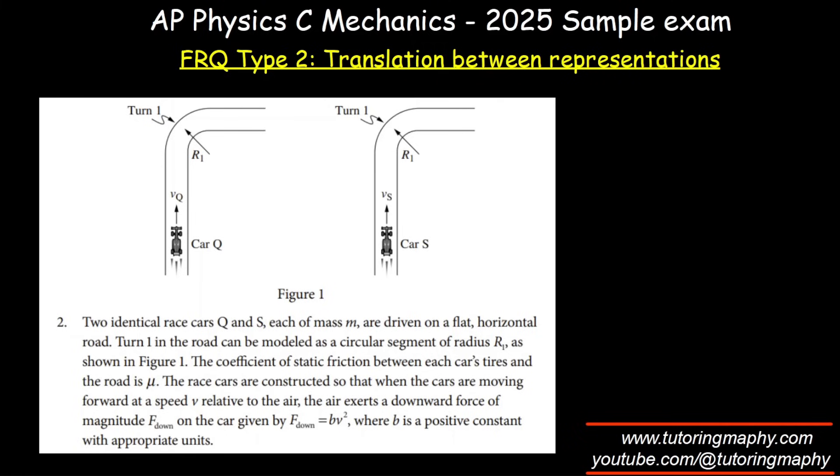Two identical cars, Q and S, each of mass m, are driven on a flat horizontal road. Turn 1 in the road can be modeled as a circular segment of radius R1. As shown in the figure, the coefficient of static friction between the cars' tires and the road is μ. The race cars are constructed so that when the cars are moving forward at speed V relative to air, the air exerts a downward force of magnitude F_down on the car given by BV^2, where B is a positive constant with appropriate units.